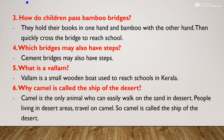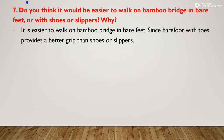What is a ballam? A ballam is a small wooden boat used to reach schools in Kerala. Why is the camel called the ship of the desert? The camel is the only animal who can easily walk on sand in the desert, so camel is called the ship of the desert. Is it easier to walk on a bamboo bridge in bare feet or with shoes? In bare feet, because the toes provide a better grip than shoes or slippers — shoes increase the chance of slipping.